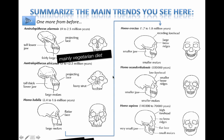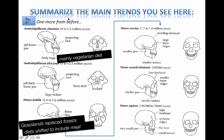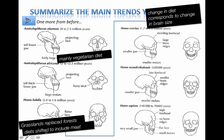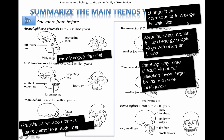A few other trends include a change in diet and habitat. Mainly vegetarian diets all the way back four million years ago. Then grasslands started replacing forests, and diets shifted to include meat. That change in diet shows strong correspondence with change in brain size. More protein, more fat, more energy supply has led to the growth of larger brains. Catching prey becomes more difficult, so you have to be smarter — natural selection may be favoring greater intelligence.